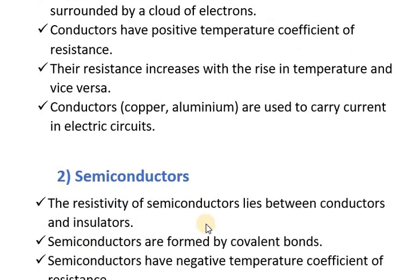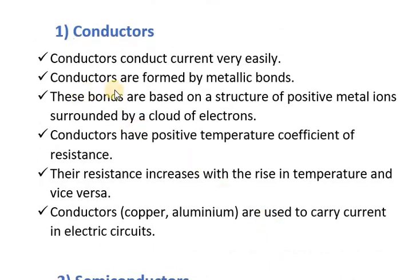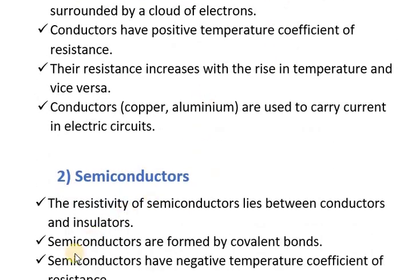Next, we look at semiconductors. The resistivity of semiconductors lies between conductors and insulators — it is somewhat more than conductors and somewhat less than insulators. Semiconductors are formed by covalent bonds, whereas conductors are formed by metallic bonds.